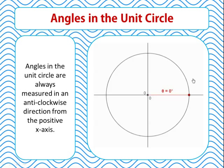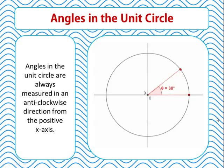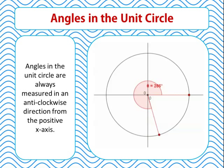When we're measuring angles in the unit circle, it's important that we understand that we always measure those angles in an anti-clockwise direction from the positive x-axis. We can measure reflex angles, and we could actually go past 360 degrees and lap around the circle again. We could also measure negative angles by going in a clockwise direction from the positive x-axis.